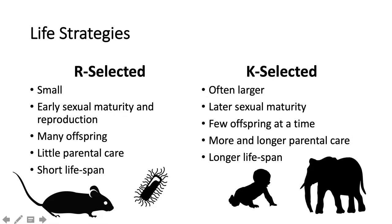You're going to have few offspring at a time and offer a lot of parental care because you're expecting those one or two offspring that you have at a time to survive and make it to adulthood. And you're probably going to have a much longer lifespan. So we'll take a look at comparing these with survivorship curves in a few minutes.